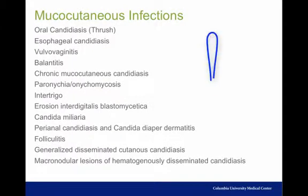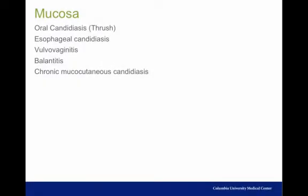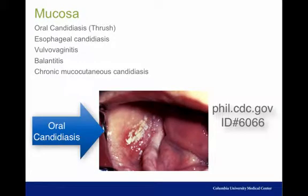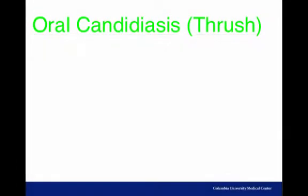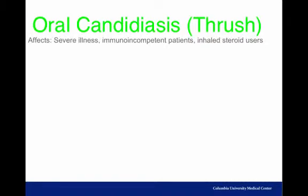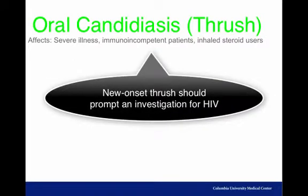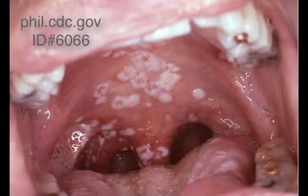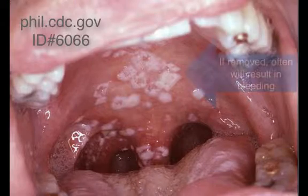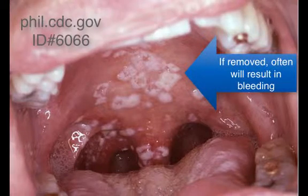There is a long list of mucocutaneous infection types, and we will only briefly discuss a few. In general, there is a superficial invasion of Candida that produces a white, cheesy-looking plaque loosely adherent to the surface. Oral candidiasis, or thrush, is mostly seen in individuals with severe debilitating illnesses, immuno-incompetent patients, or inhaled steroid users. If thrush occurs in a healthy-appearing person, it should prompt an immediate investigation for underlying HIV infection. Thrush appears as discrete white patches on the buccal mucosa, tongue, and palate; when removed, they reveal an inflamed or bleeding base.